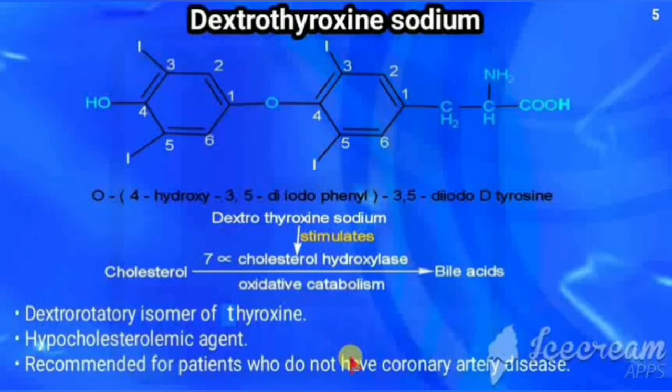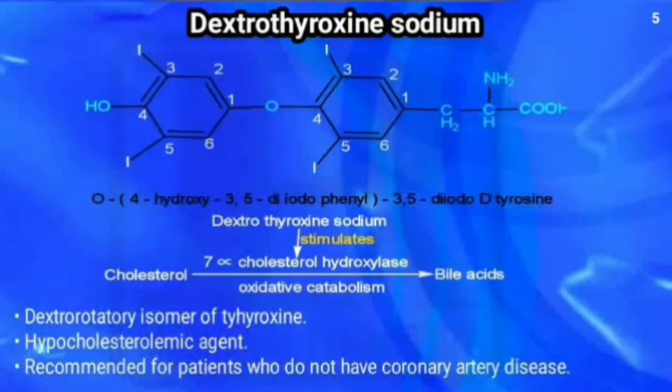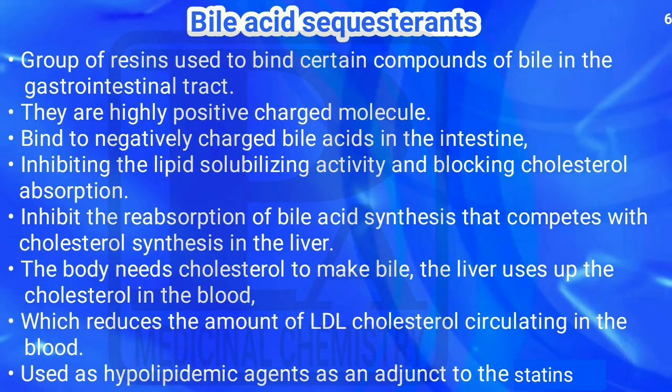Dextrothyroxine is recommended for patients who do not have coronary artery disease. Next are bile acid sequestrants — a group of resins used to bind certain compounds of bile in the GIT. They are highly positively charged molecules that bind to negatively charged bile acids in the intestine, inhibiting lipid-solubilizing activity and blocking cholesterol absorption. They inhibit reabsorption of bile acids, which competes with cholesterol synthesis in the liver, reducing LDL cholesterol circulating in the blood. Used as a hypolipidemic agent adjunct to statins.